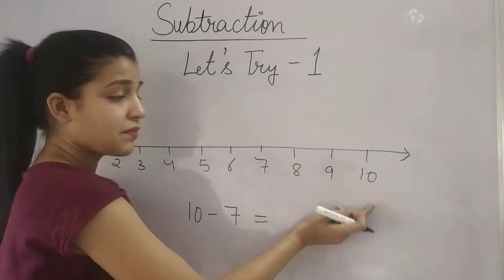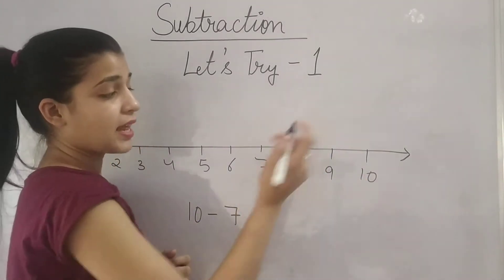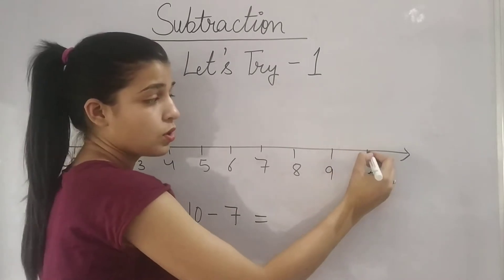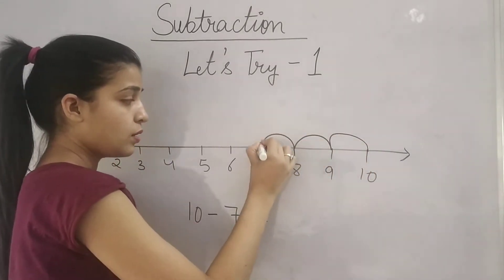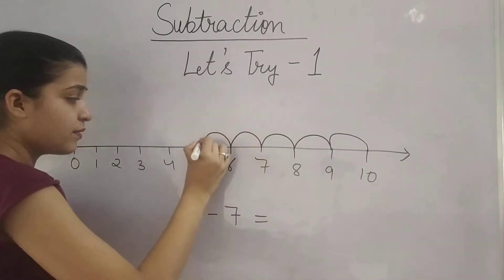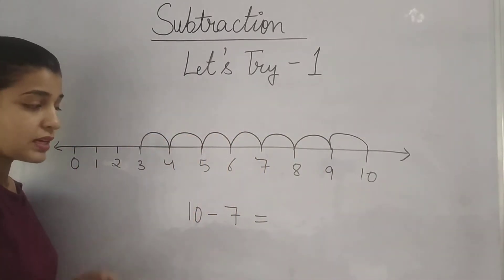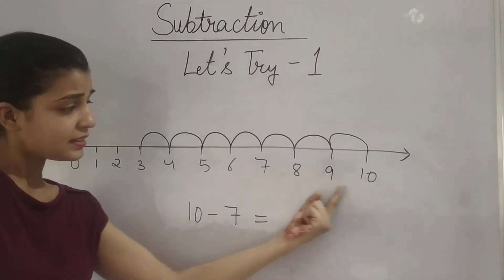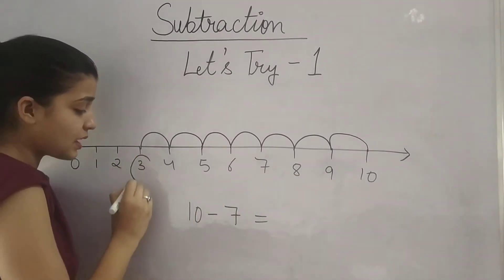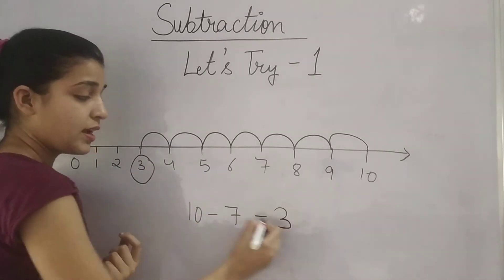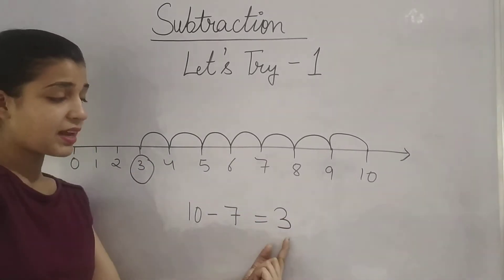So let's start — 7 steps back. From 10, 1 step back reaches 9: 1, 2, 3, 4, 5, 6, 7. We came 7 steps back from 10, so 7 steps back lands us on 3. It means if we subtract 7 from 10, what we will get? 3.